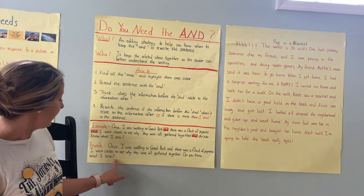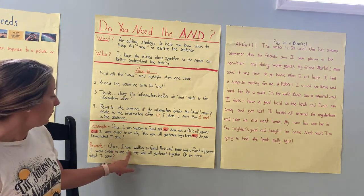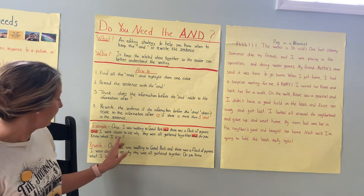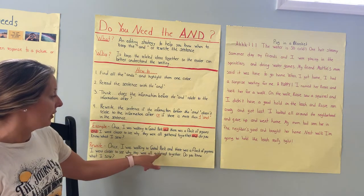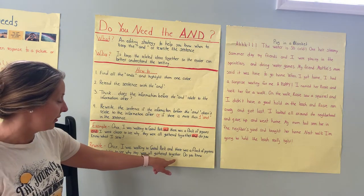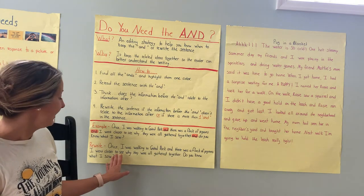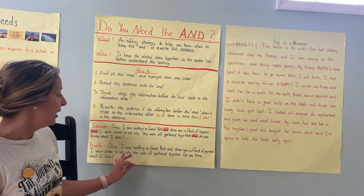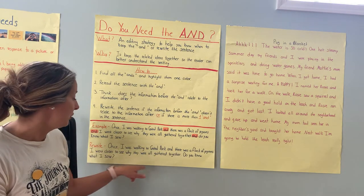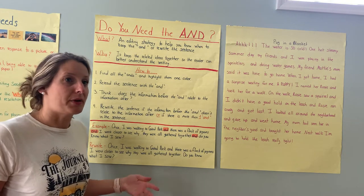So I rewrote it here. Let's see how my rewrite sounds. 'Once I was walking to Central Park and there was a flock of pigeons. I went closer to see why they were all gathered together. Do you know what I saw?' I think that does sound better. The shorter sentences help me understand the information of what's going on, and that question really does pique my interest as a reader because I want to know what's going on — what did the writer see?